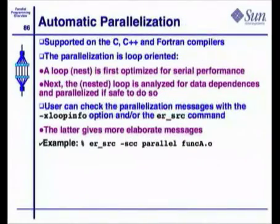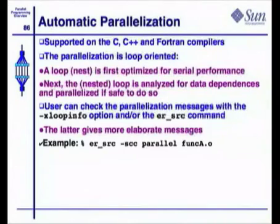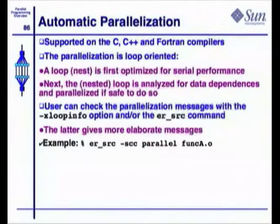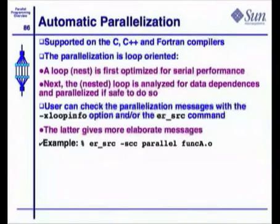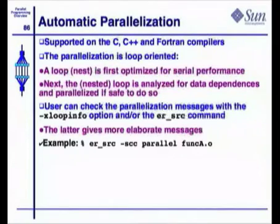Automatic parallelization is supported on the Sun Studio C, C++, and Fortran compilers. It's loop-oriented. It could be a loop nest. First, the compiler will optimize for serial performance, and then it will parallelize. And if you like, you can get diagnostics out of the compiler. There are two different ways of doing it: a compile option called xloopinfo that will give you immediate feedback on the screen, and a command called er_source that will analyze the object file and show you the messages.